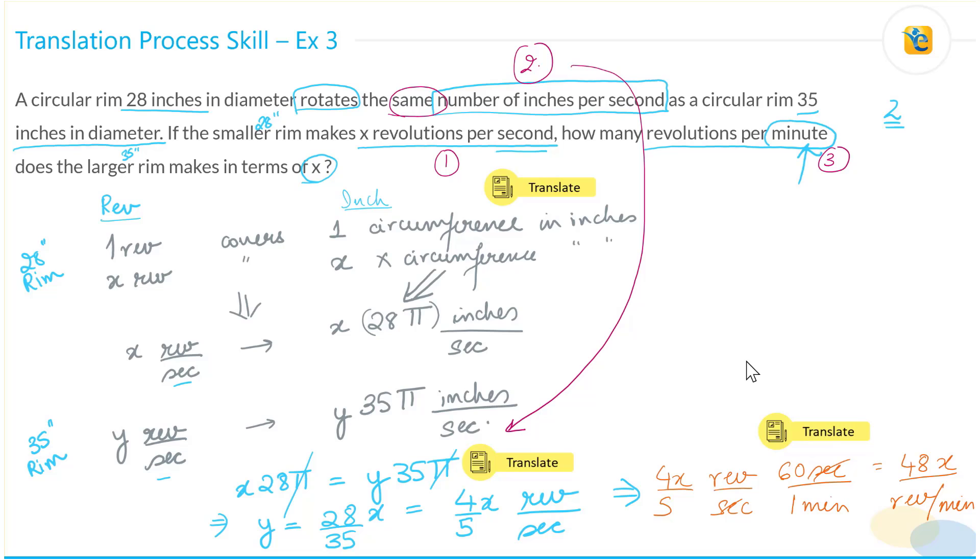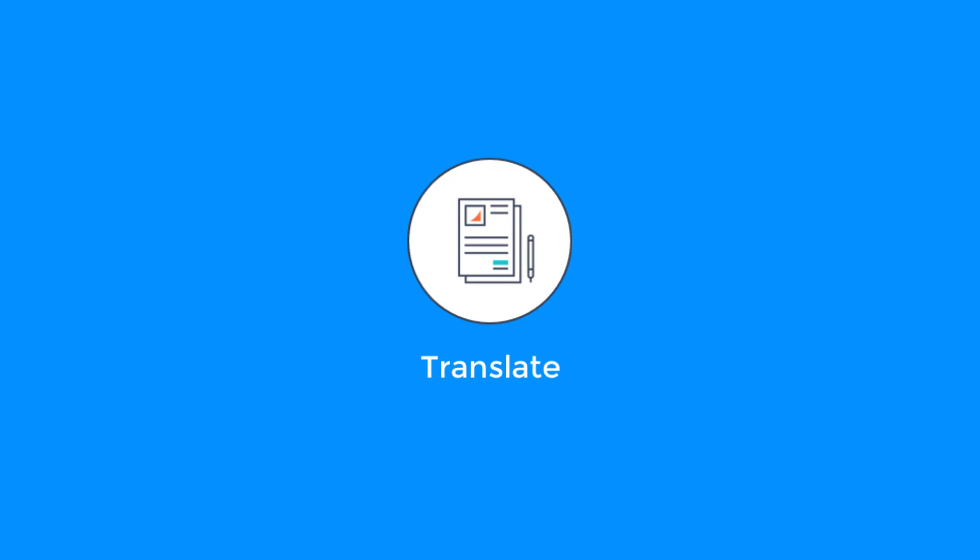But the identification of those levels started from the review of the question statement. As we read it, we saw there is something given about the number of inches, then the information about revolutions per second, and then what we need: revolutions per minute. Each of those entities from the question statement has been used at various steps in your solution. So very important to master this process skill so that you can step-by-step get closer to the solution. Begin applying translate process skill from this point onwards. Happy learning.